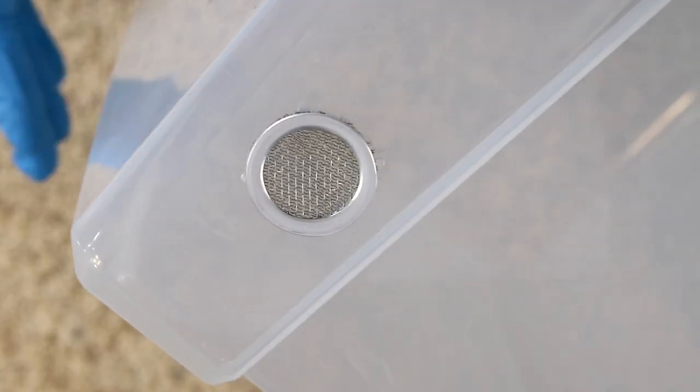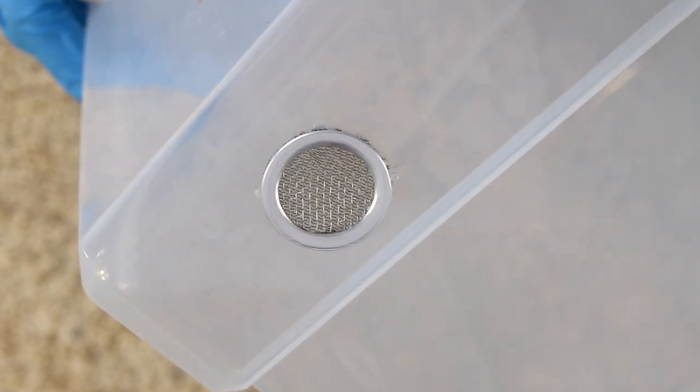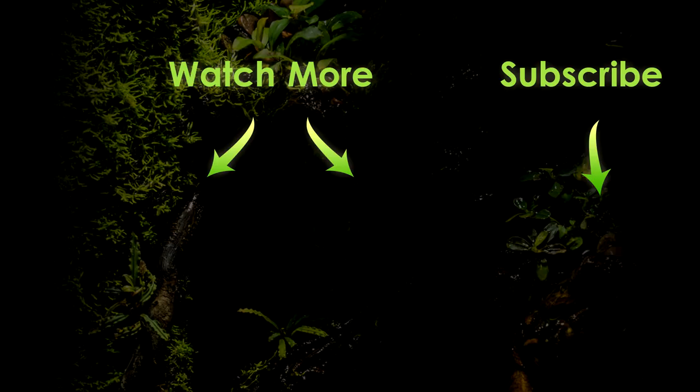As you can see here I've done the small 1-inch screen in the exact same way as I did the 2-inch that you just saw me do. In the next video in the series we're going to add the substrate and plants.